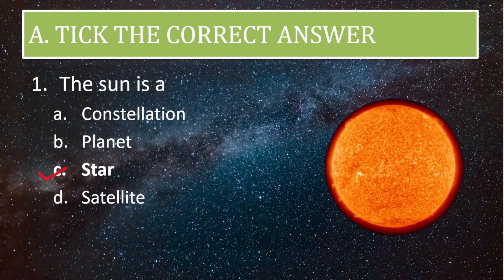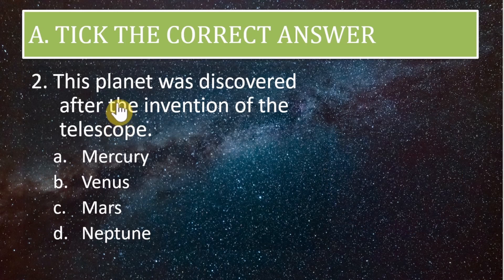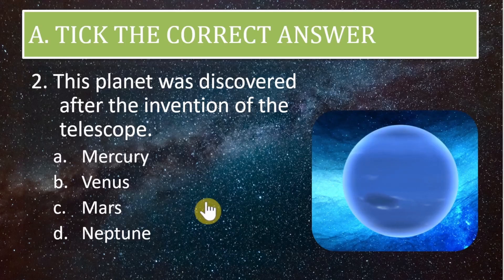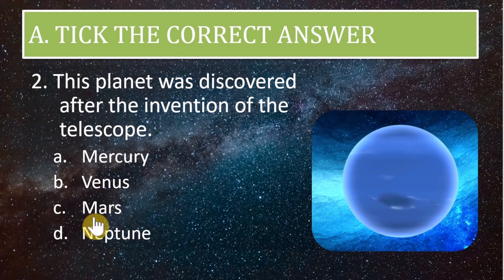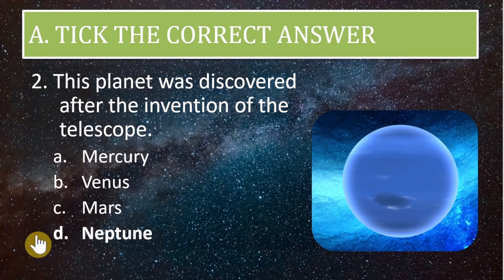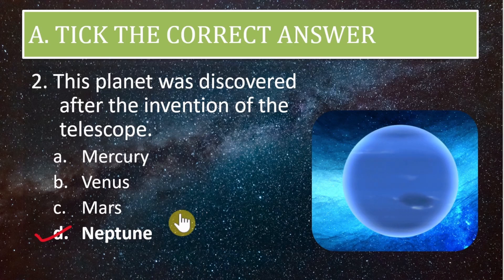Second question: this planet was discovered after the invention of the telescope. The options are Mercury, Venus, Mars, or Neptune. The correct answer is Neptune. Neptune was discovered after the invention of the telescope because it is the farthest planet that we know.